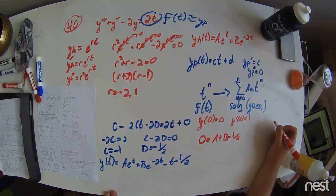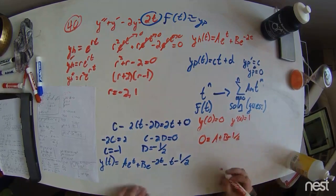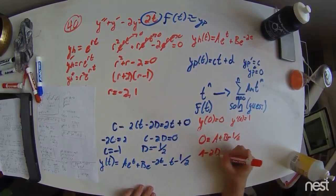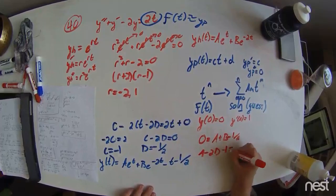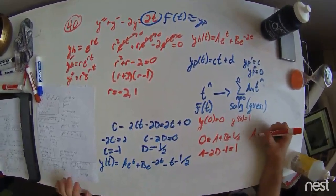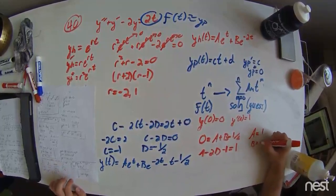And in the same thing, for y prime of 0, we have a minus 2b minus 1 equals 1. Solving for a and b, we get a equals 1 and b equals negative half.